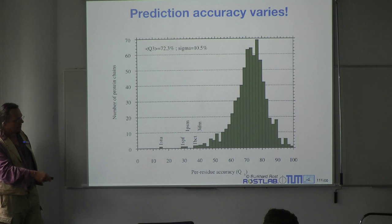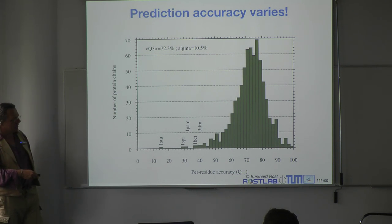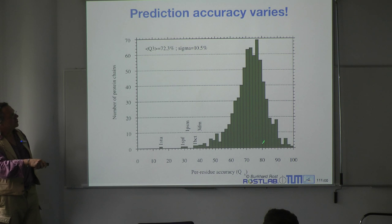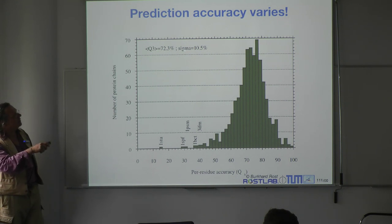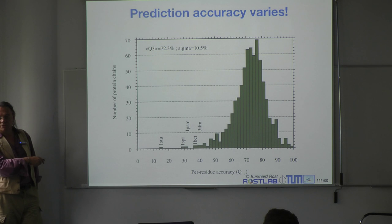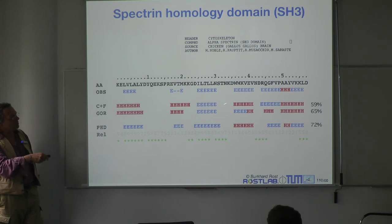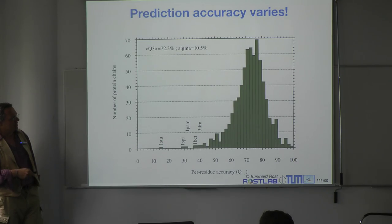The Q3 simply measures three-state accuracy — helix, strand, or other — asking how many residues are correctly predicted between 0 and 100%. The average is about 72, which matches exactly the example shown. This is the average for that method, although for this particular case, these two methods are clearly above average.